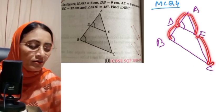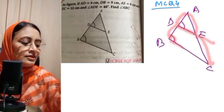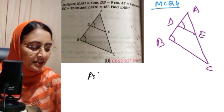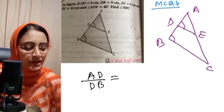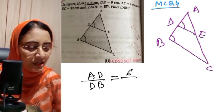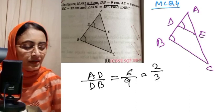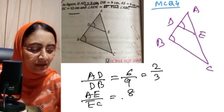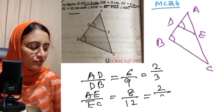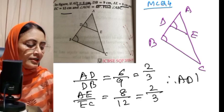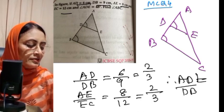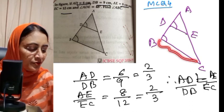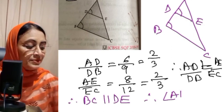If these two ratios are equal, then the lines are parallel. AD/DB equals 6/9 equals 2/3. AE/EC — we check this ratio as well. If AD/BD equals AE/EC, then BC is parallel to DE, and therefore angle ABC equals angle ADE equals 48 degrees.